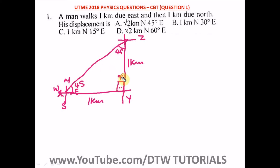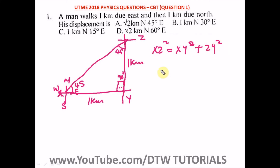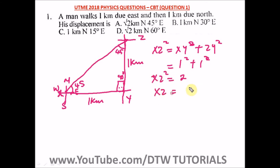So we have 45° plus 45° which is 90°, and 90° plus this 90° is 180°. We've resolved the angle. Now to find the displacement, we have to find the distance XZ. Using Pythagoras: XZ² = XY² + ZY². So XZ² = 1² + 1² = 1 + 1 = 2. Therefore XZ = √2.